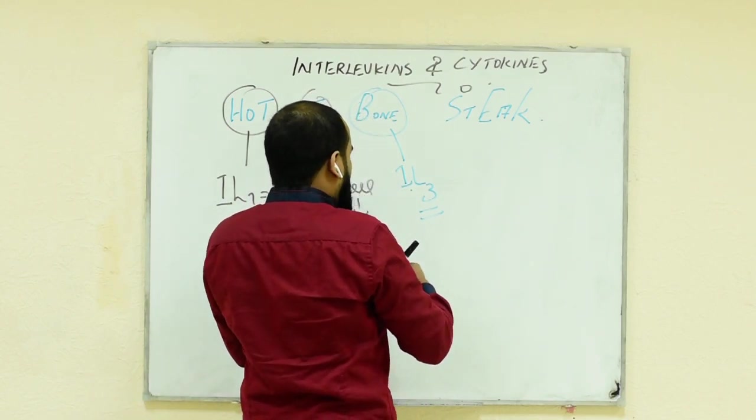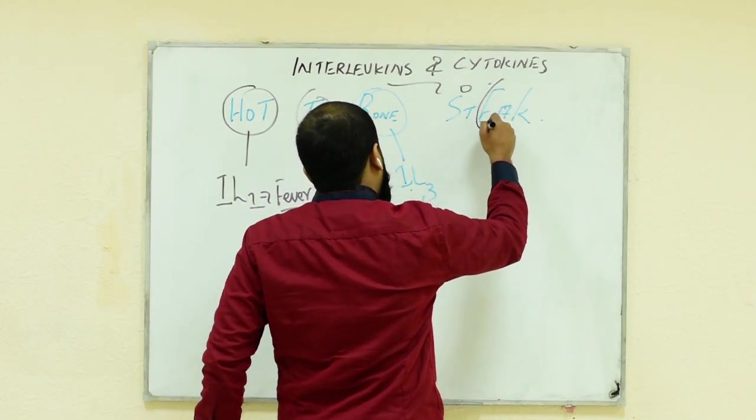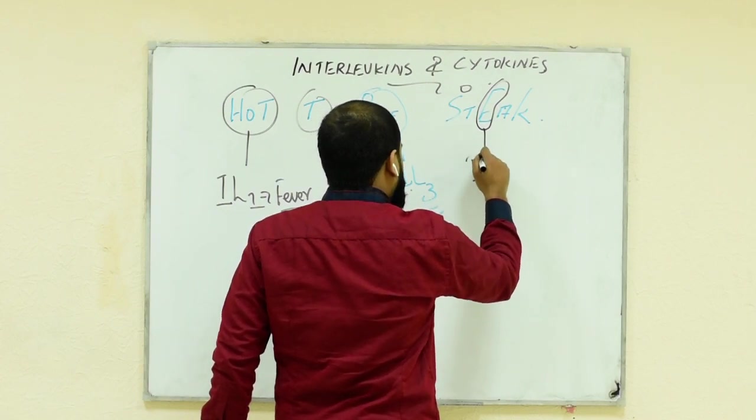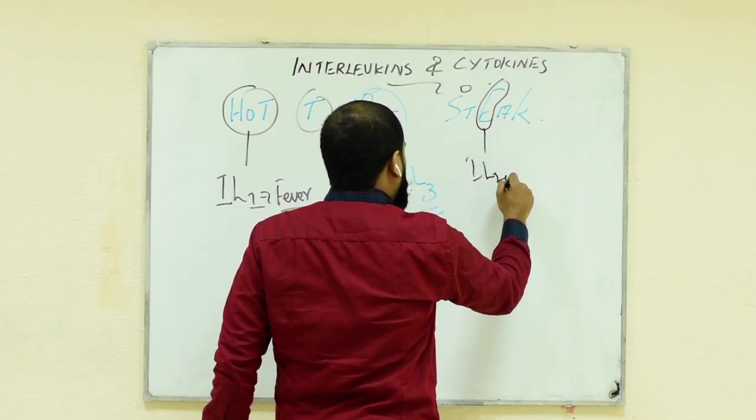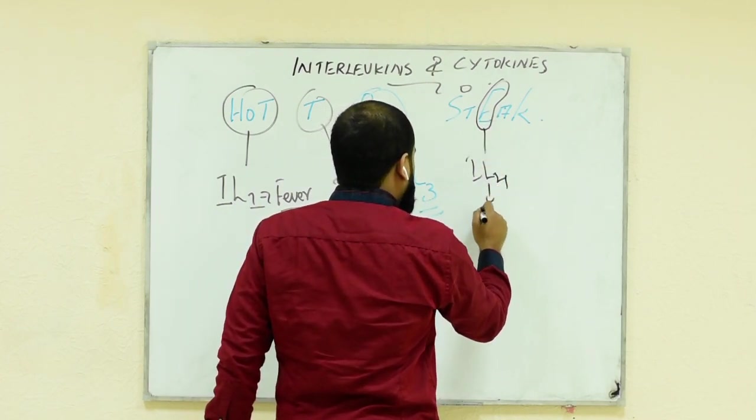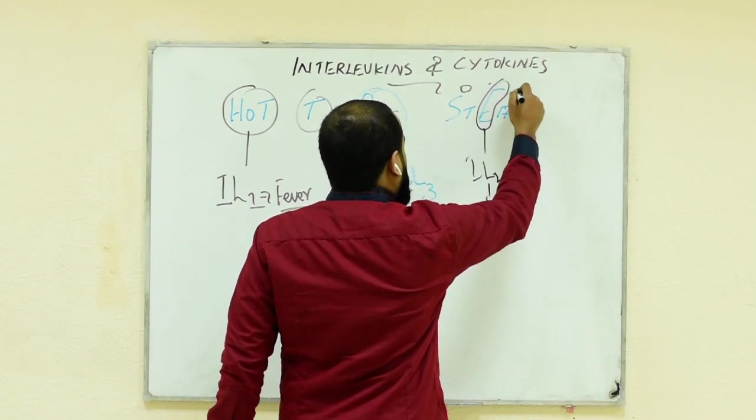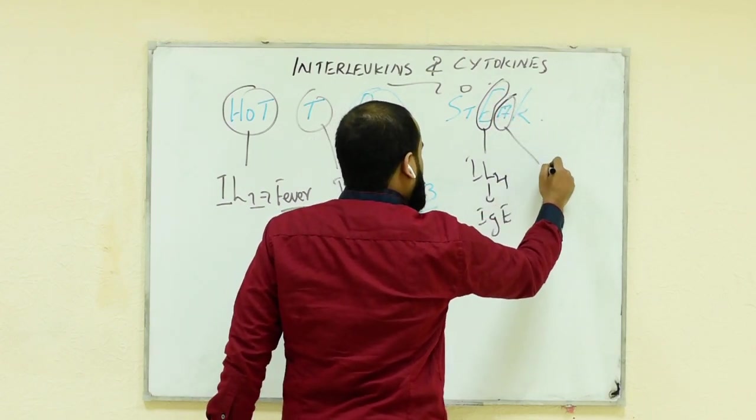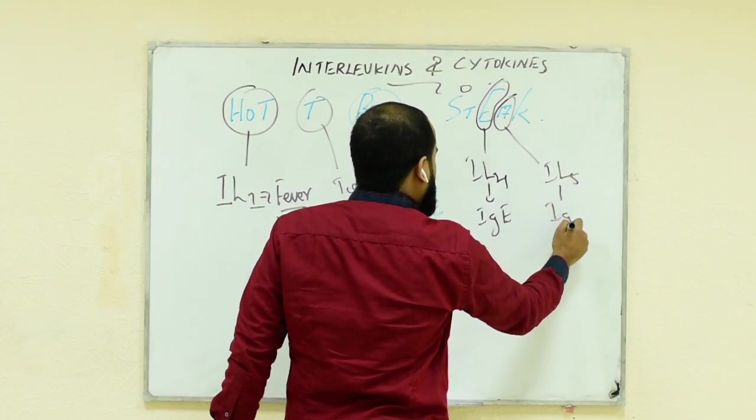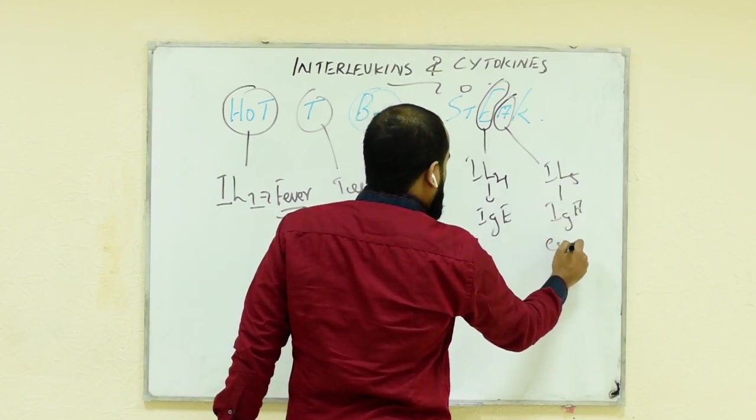4 is for IgE, interleukin 4. IgE interleukin 5, IgA or eosinophil.